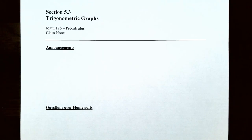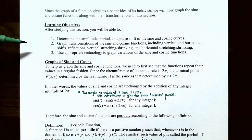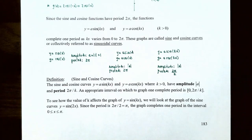Hi everyone, it's Professor Pimenton and in this video we're going to finish up our discussion on trigonometric graphs. In the previous video we talked about how to determine the amplitude, the period, and the phase shift of the sine and cosine curves, and we also talked about graphing transformations including vertical and horizontal shifts, reflections, vertical stretching and shrinking, and horizontal stretching and shrinking. In this video we're going to talk about how to use appropriate technology to graph variations of the sine and cosine functions.